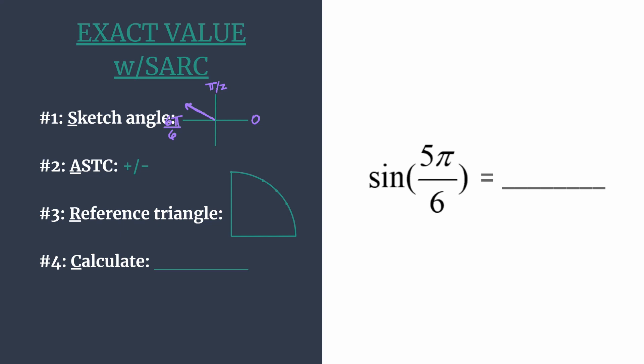Now we can use ASTC to decide if our final answer should be positive or negative, and that goes back to where we found our angle. That's in the second quadrant. Now ASTC is an acronym to help you think of which trig functions are positive in each quadrant. Think all students take classes.